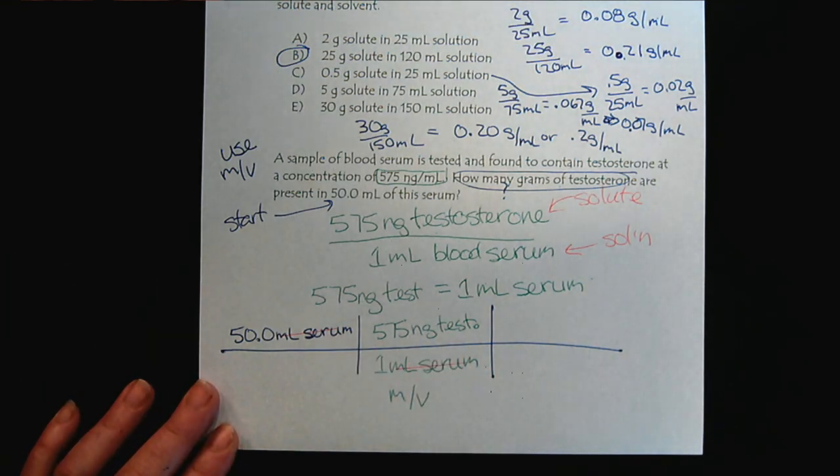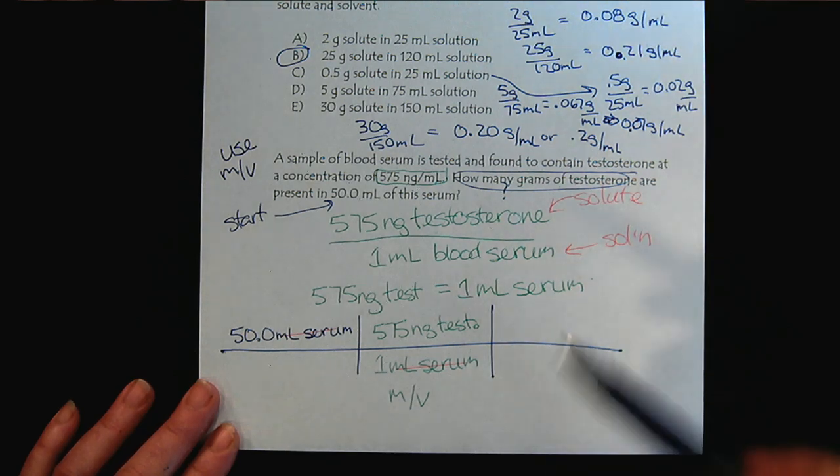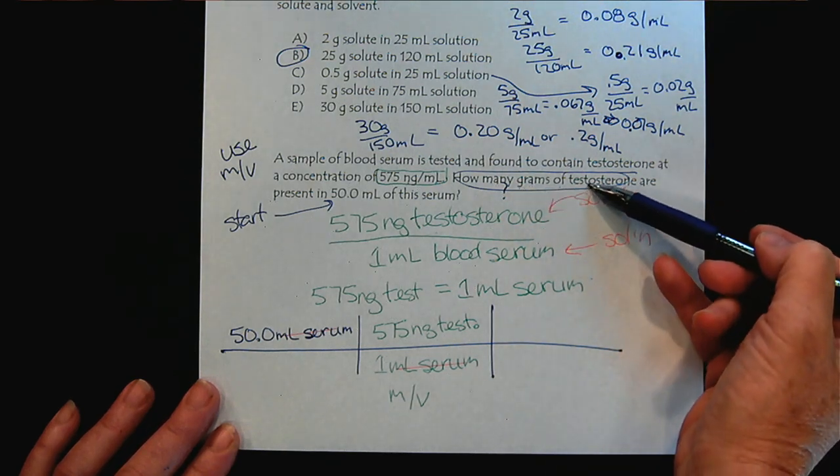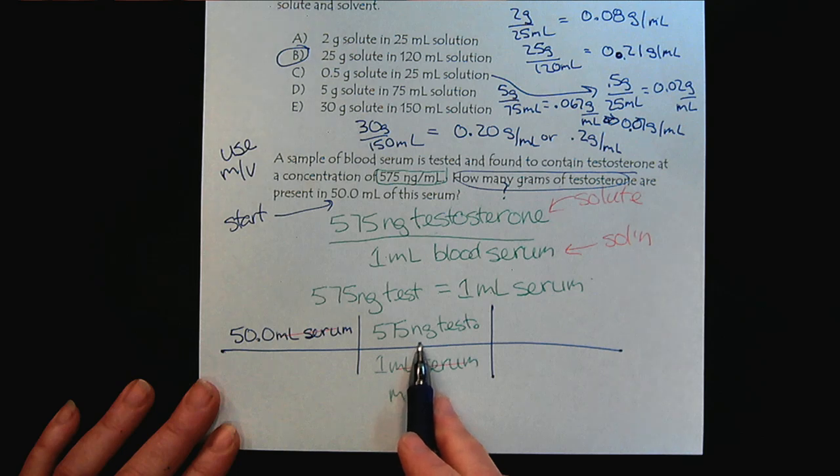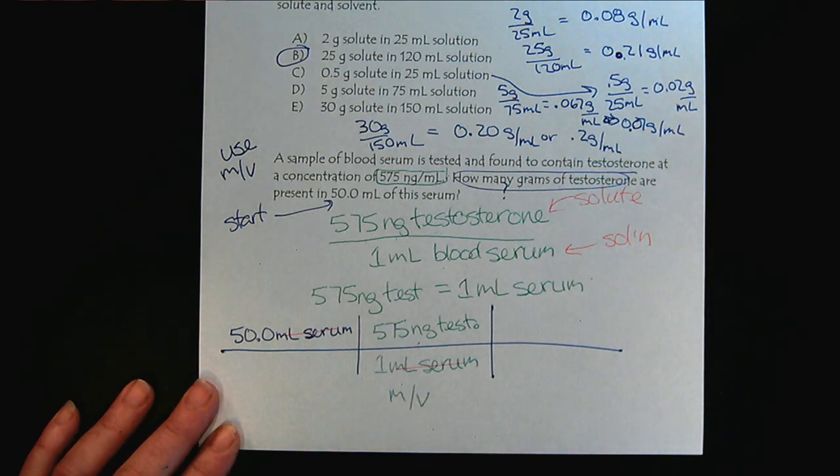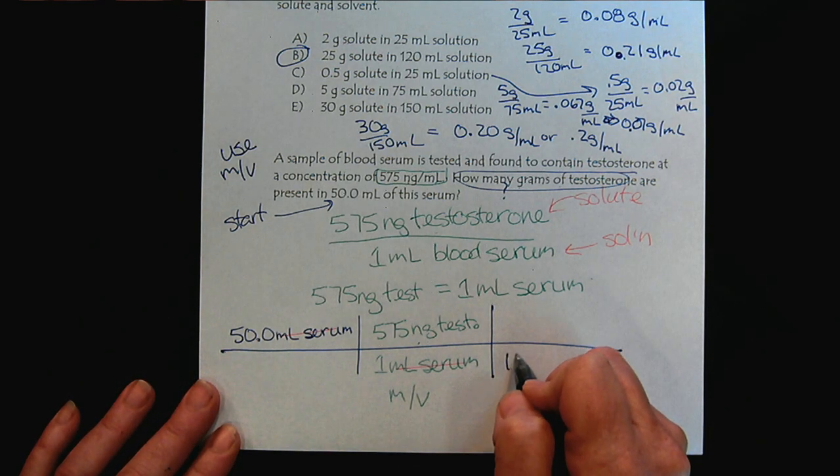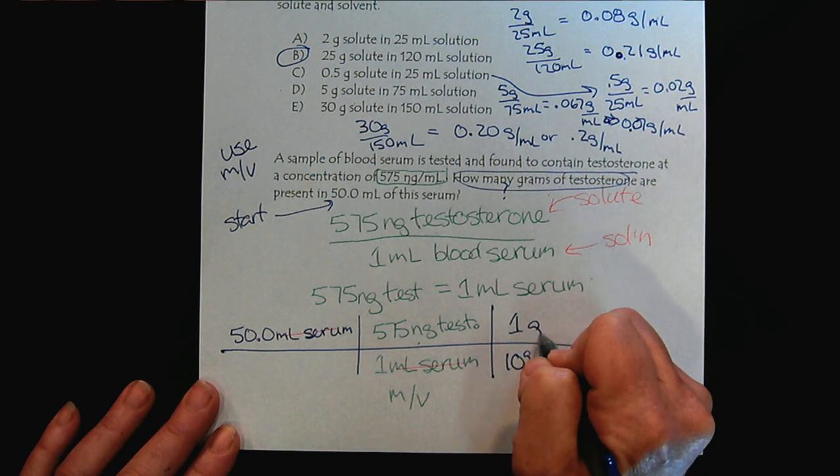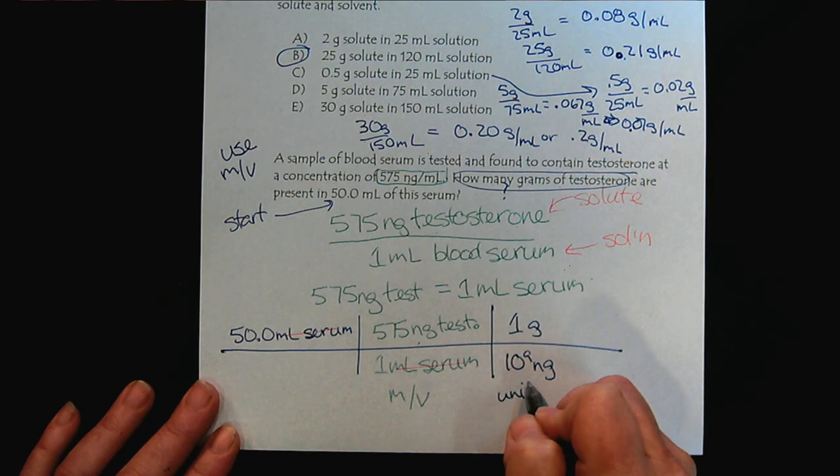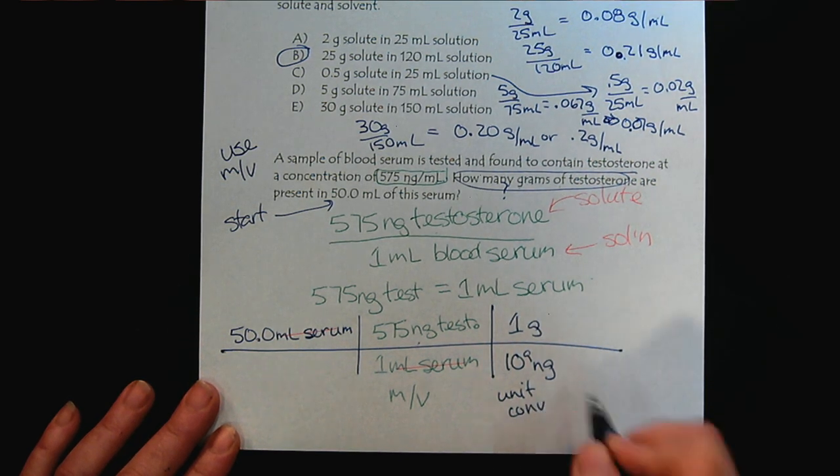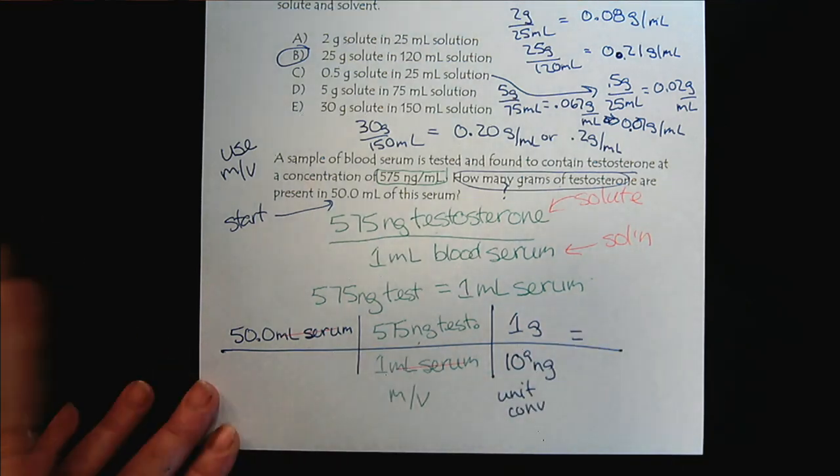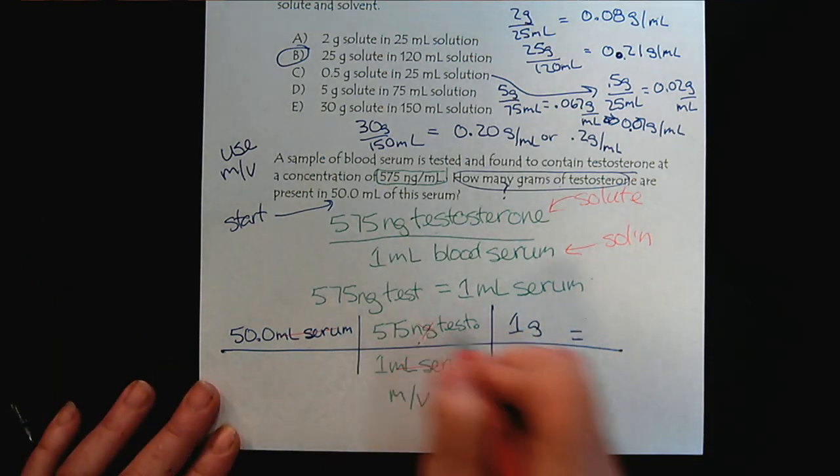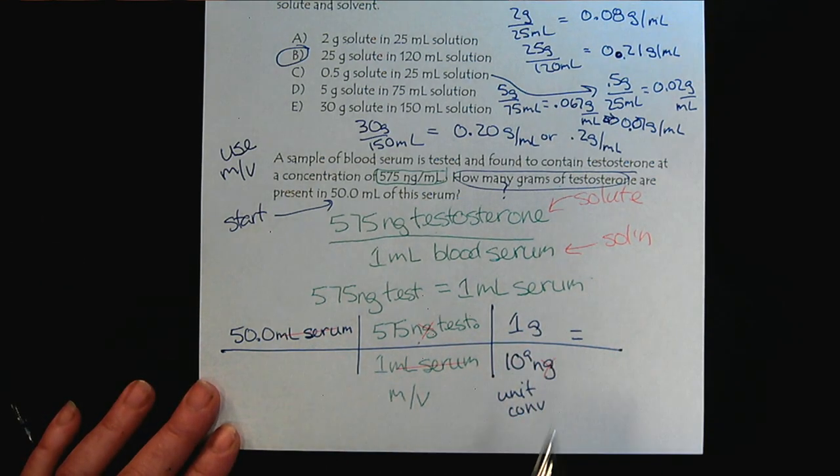Are we done? Let's look back and see what the question is asking. It's asking the grams of testosterone. We're in nanograms, so we're going to need to do a unit conversion. There are 10 to the 9th nanograms in a gram. Here's our unit conversion. Now we've canceled out the nanograms of testosterone and we're left with grams.